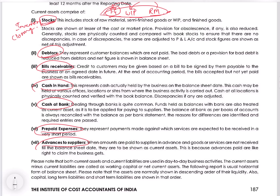Stocks are normally valued at cost or market price, which will be discussed in AS2. They will be valued as on the balance sheet date and appear in the balance sheet with whatever figures apply on that day. Debtors are the outcome of your credit sales, which you will be recovering in the next 12 months, so these are also current assets.